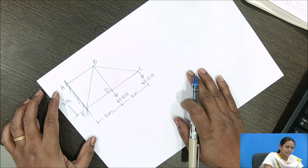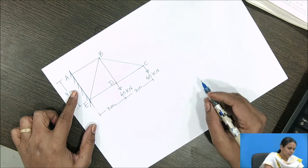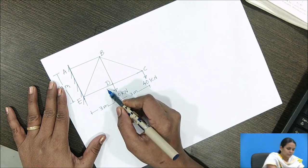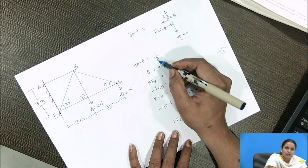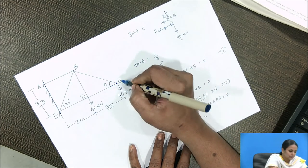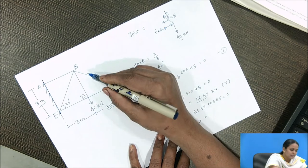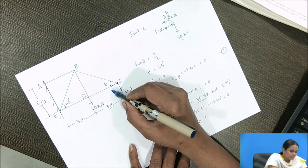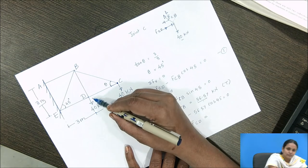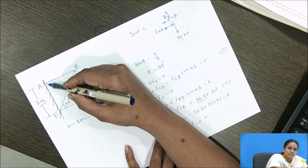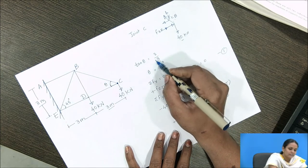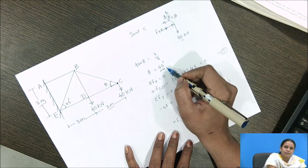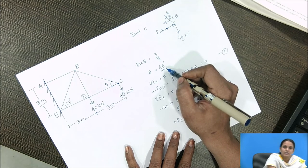In this problem, a truss is supported to a vertical wall — it is fixed at the vertical wall. We need to find forces in all members of the truss using the method of joint. First, we find theta, the inclination of force BC. The horizontal dimension is 3 meters and the vertical dimension is also 3 meters for each member. Using tan theta = y/x, we get theta = 45 degrees.